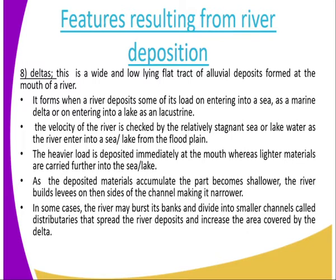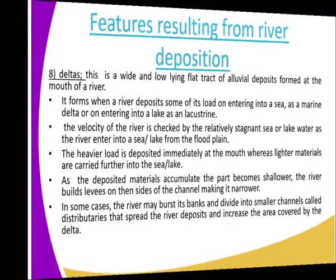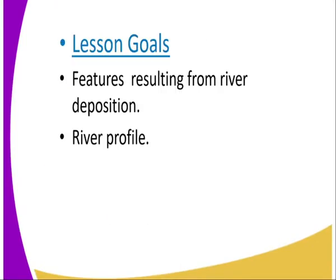The velocity of the river is checked by the relatively stagnant sea or lake water as the river enters into the sea or lake. That is the reason why deltas are formed. The river load is deposited immediately at the mouth, whereas the lighter materials are carried further into the sea or lake. As the deposited materials accumulate, that part becomes shallow.